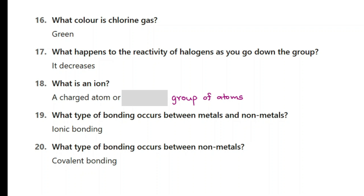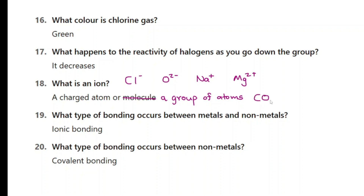What is an ion? An ion is a charged atom or a group of atoms. If you think about the chloride ion, it is an atom with a charge on it. The oxide ion is an oxygen atom with a two minus charge. Sodium plus ion, magnesium two plus ion — these are all atoms with a charge. However, there are also groups of atoms with a charge: carbonate ion, sulfate ion, hydroxide ion, and ammonium ion. All of these are ions.